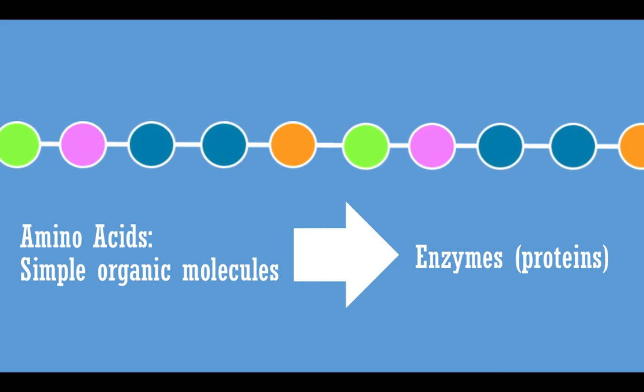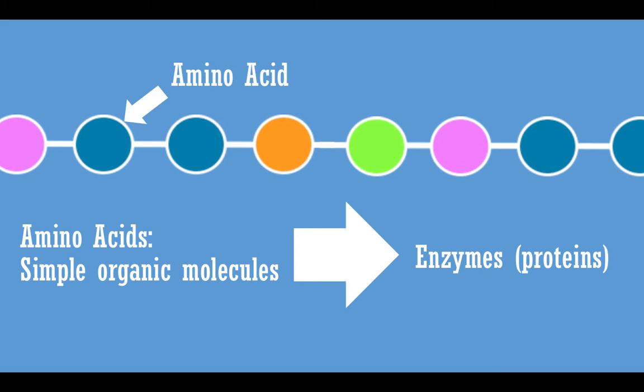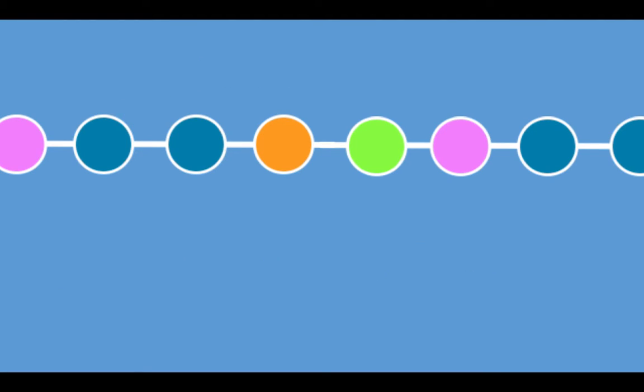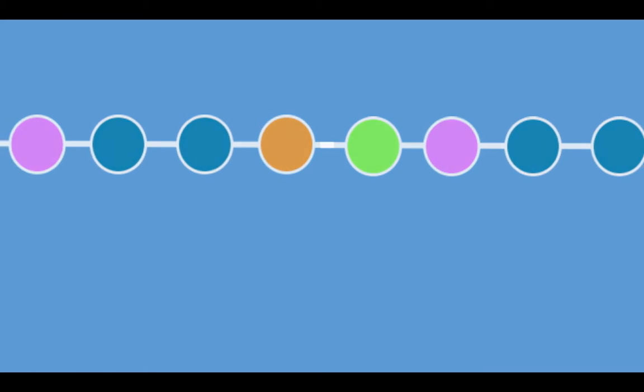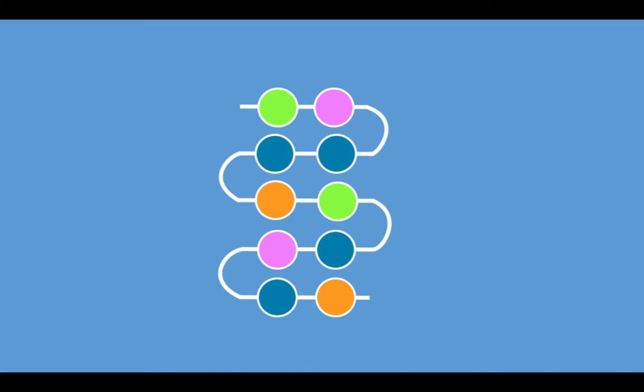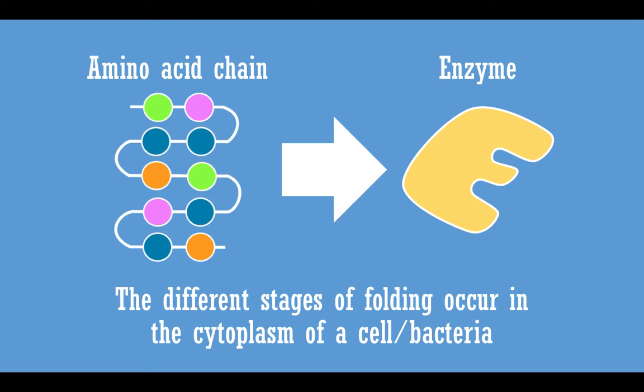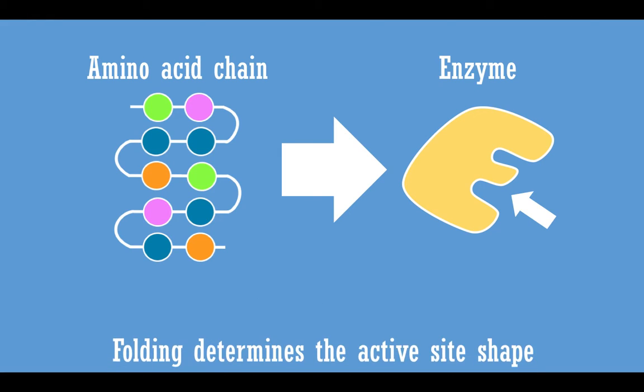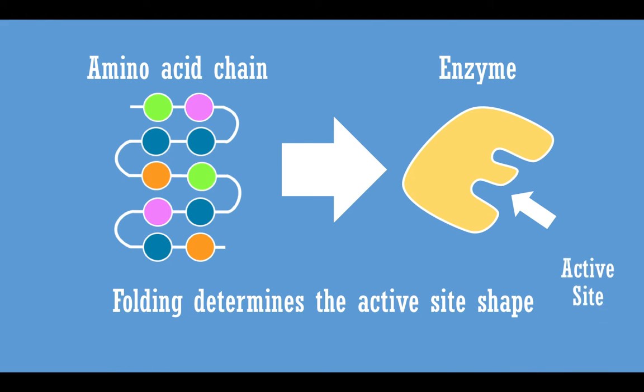The shape of an enzyme is determined by a specific sequence of amino acids. These are simple organic molecules which form the basis of all proteins. Inside the cytoplasm of cells, the amino acid chain is folded to create an enzyme with a specific active site. The active site is the position on these enzymes where substances bind to in order to be broken down.